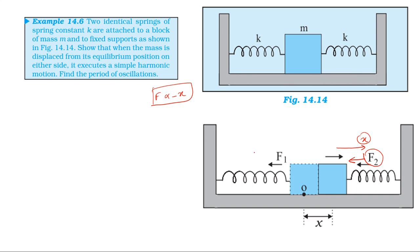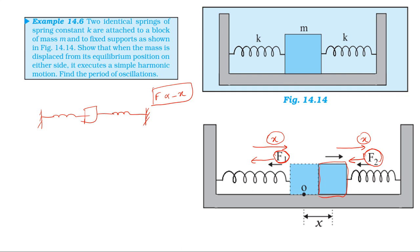The direction of force F1 is towards the left. The first spring is compressed, and in the second spring the block force F2 acts towards the left. In the first spring, F1 force acts, and F1 and F2 act in the same direction.